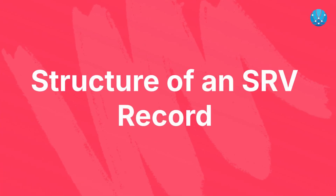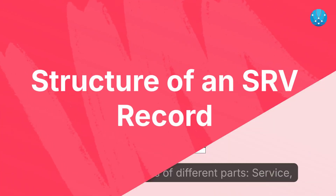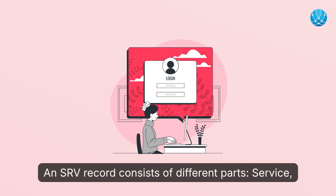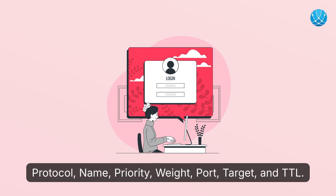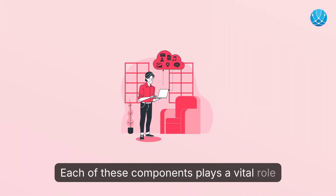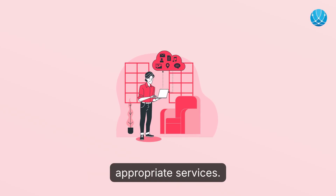An SRV record consists of different parts: service, protocol, name, priority, weight, port, target, and TTL. Each of these components plays a vital role in how the record directs devices to the appropriate services.